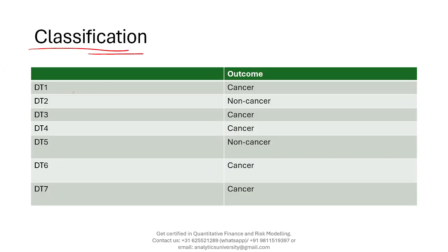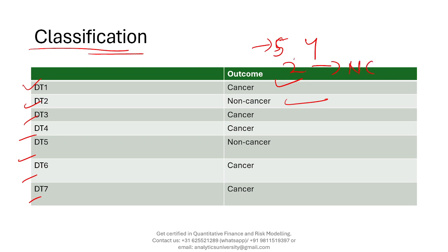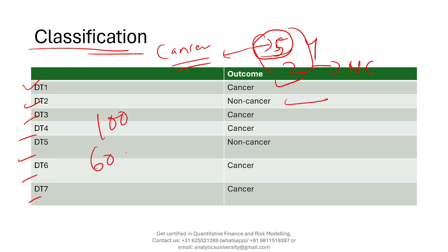Here is a classification type problem. You have taken seven random samples from the main dataset, and put seven decision trees. The idea is to predict whether someone has cancer or not. The first decision tree says cancer, the second says no cancer, and so on across seven outcomes. Five of the cases say yes, cancer, and two say non-cancer. The final result is the maximum — five is greater than two, so the outcome is that the person has cancer. For 100 trees, if 60 say cancer and 40 say no, you take the maximum, which is cancer.